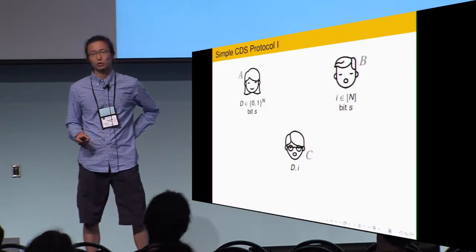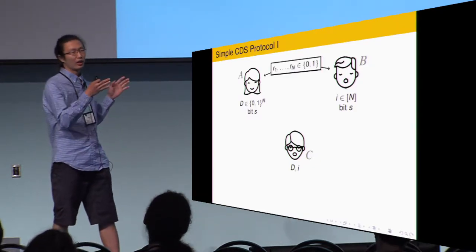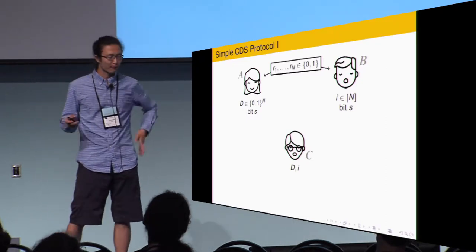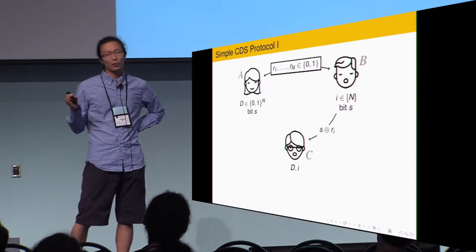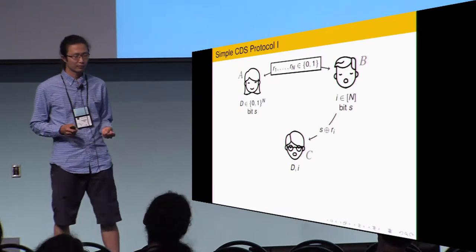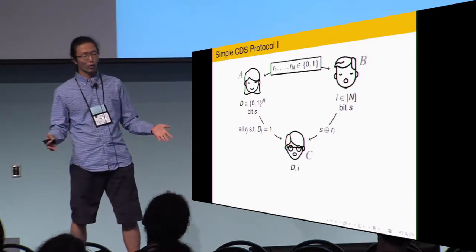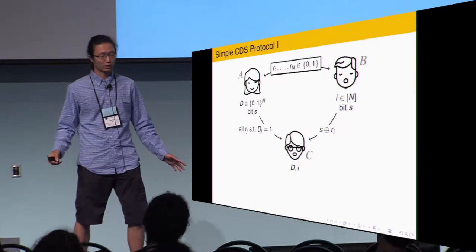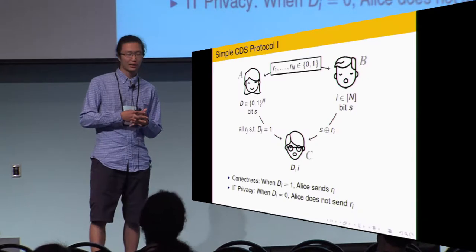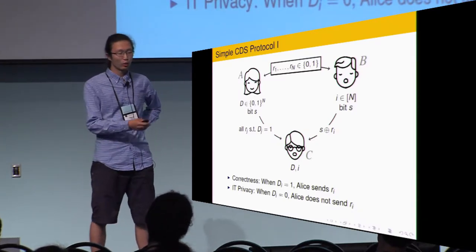Let's have a toy construction to see how it works. Here, the private random tape: we read n bit of random bit. Bob sent the secret bit XOR the S random bit. This is like a one-time pad. Then what Alice do is natural. He sent all the random bit R_j, such that D_i equals one, or D_j equals one. So, the secret is one-time padded by R_i, and R_i is leaked by Alice if and only if D_i equals one.